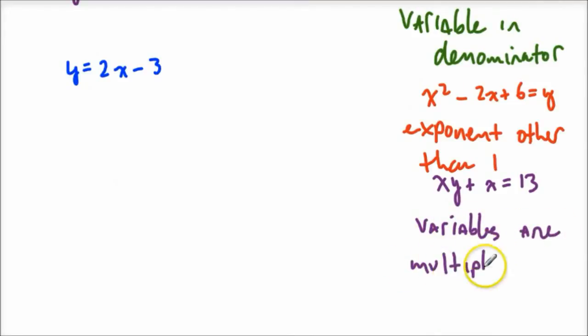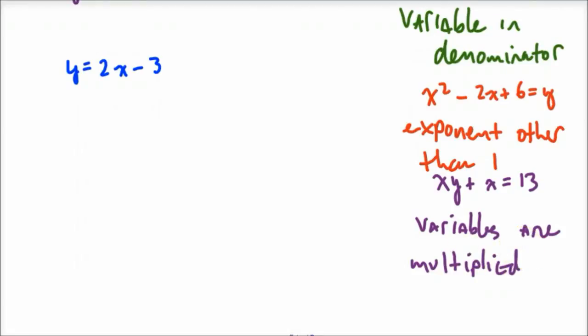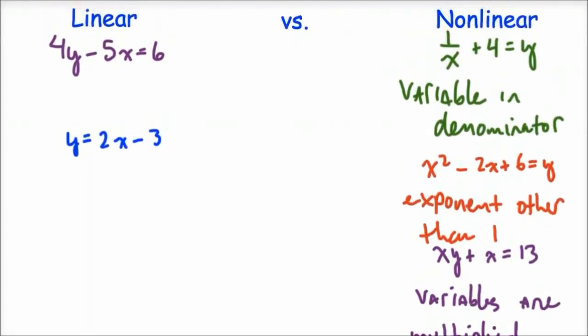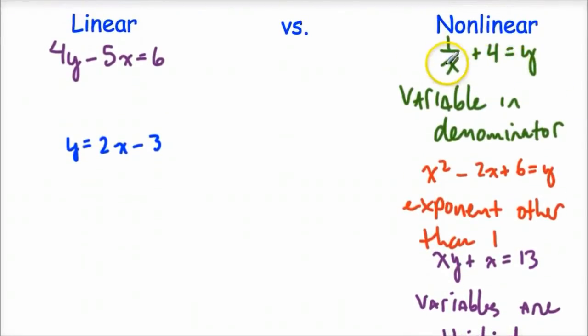So basically, if you're asked if something is linear or nonlinear, here are the three dead giveaways to tell you that it's nonlinear. One, you might have a variable in the denominator. It could be either x or y. As long as it's in the denominator, it means it's going to be nonlinear. The other giveaway is that if you have an exponent that's other than 1, so if something's squared or greater, then you know that that is not going to be linear.